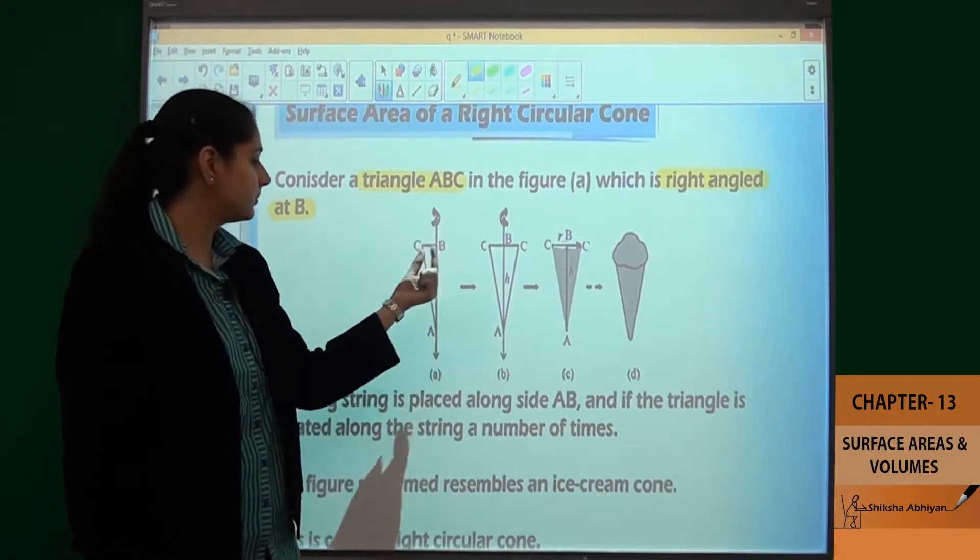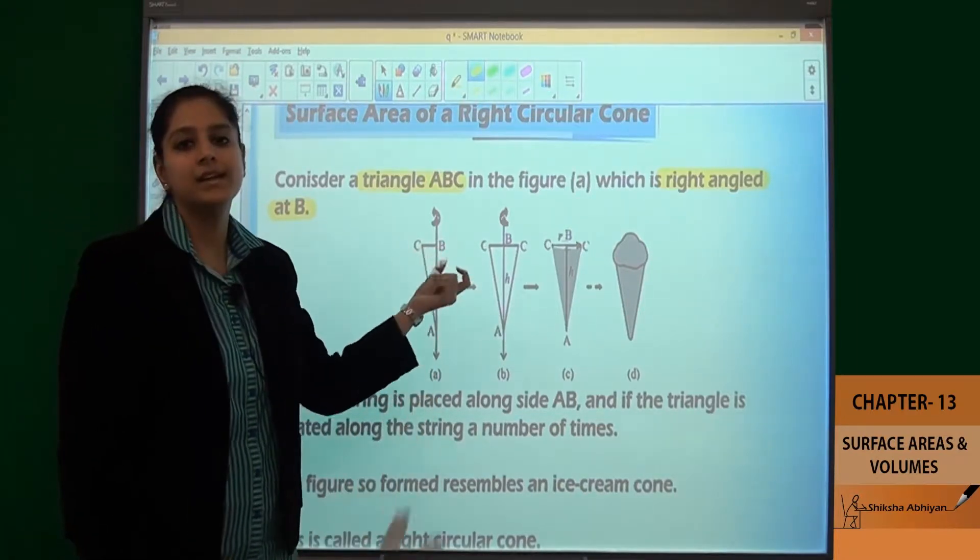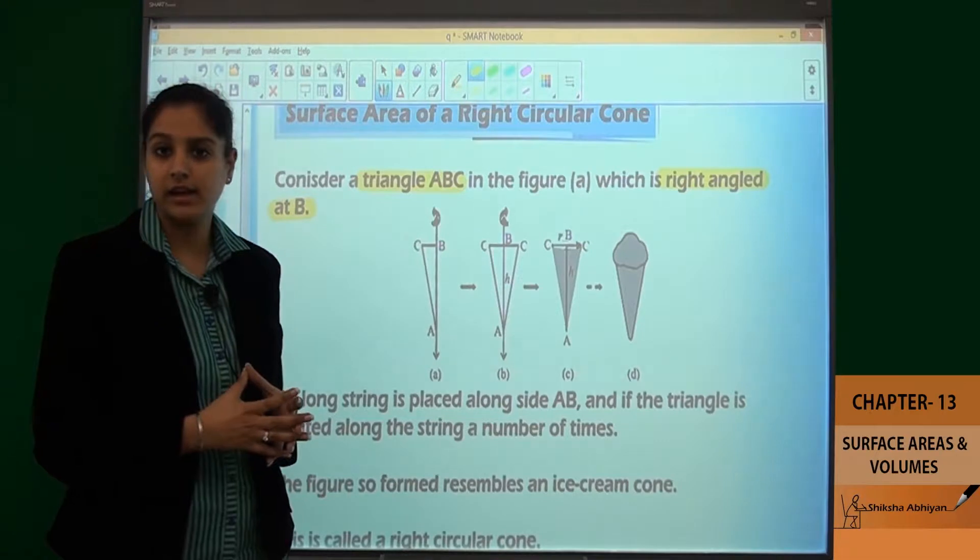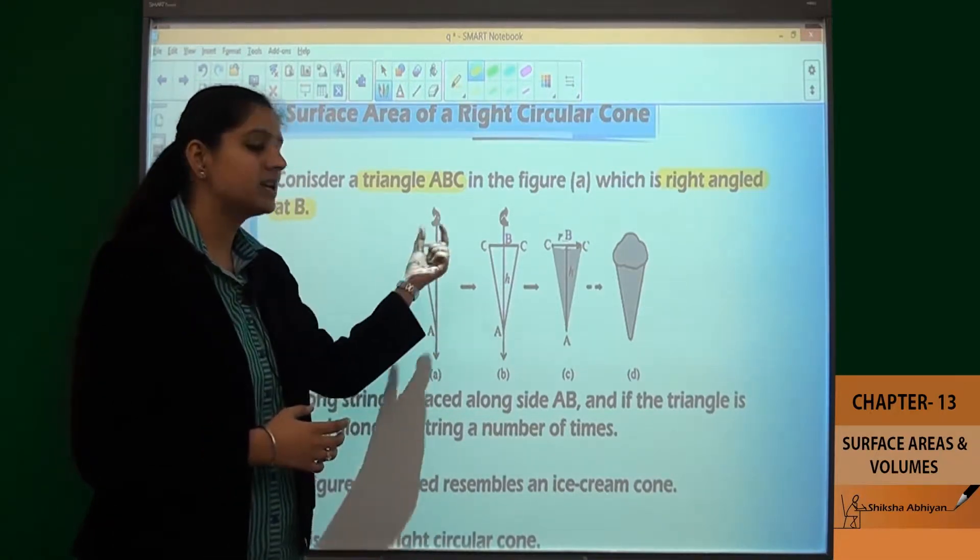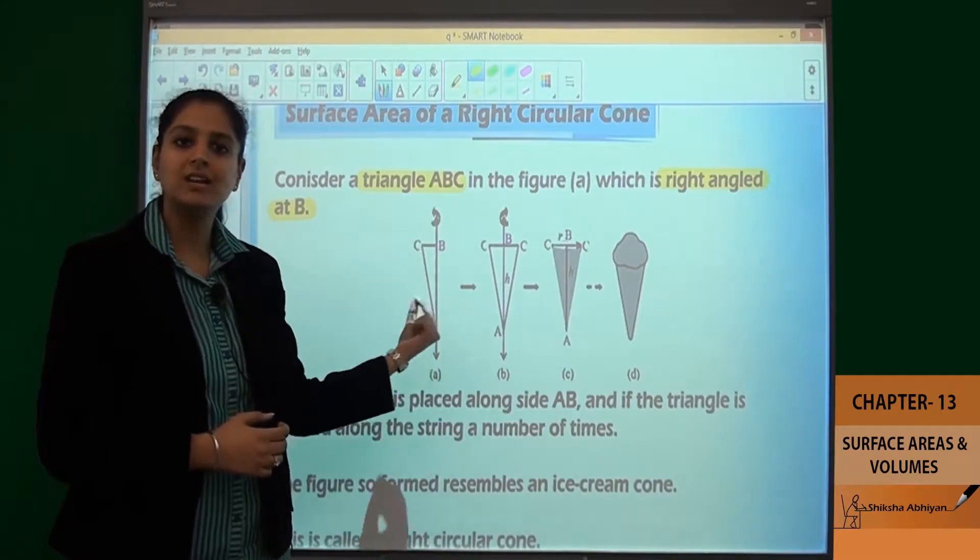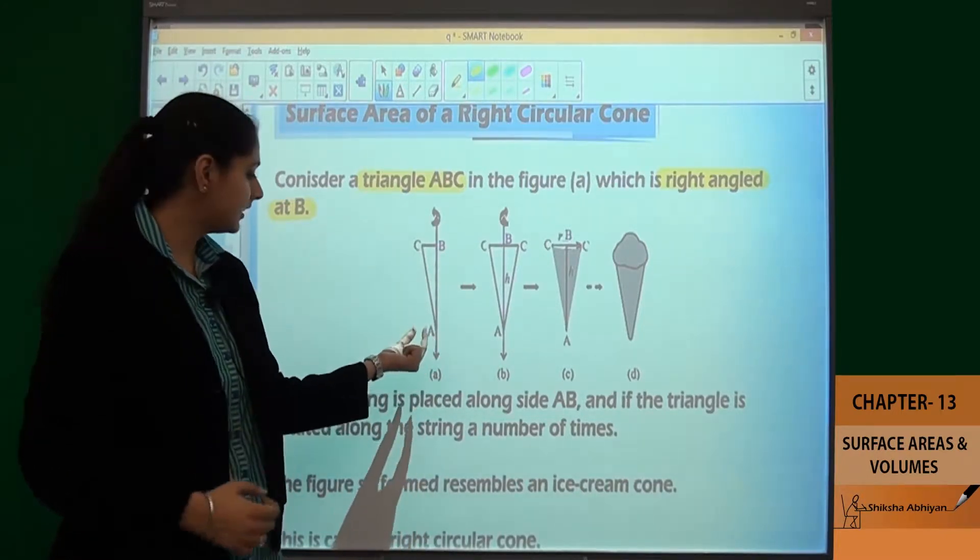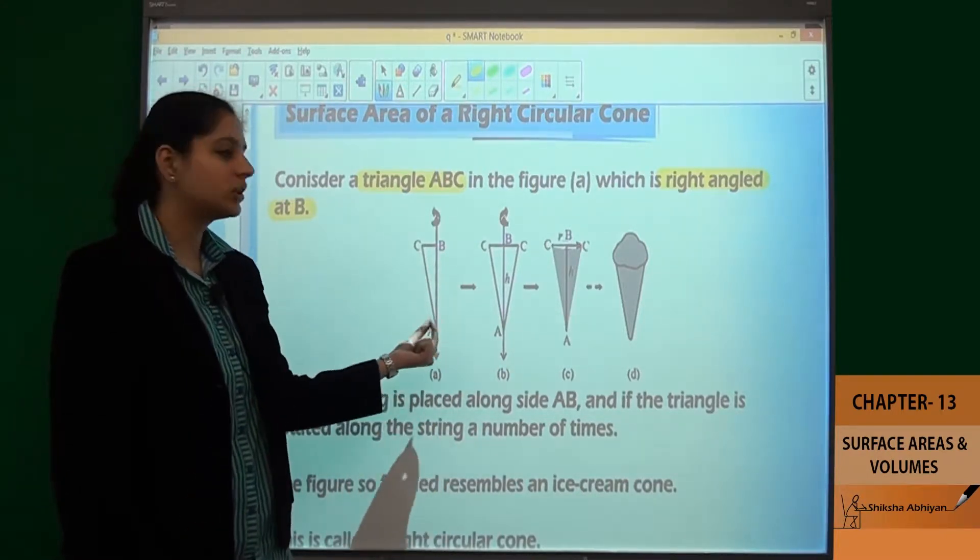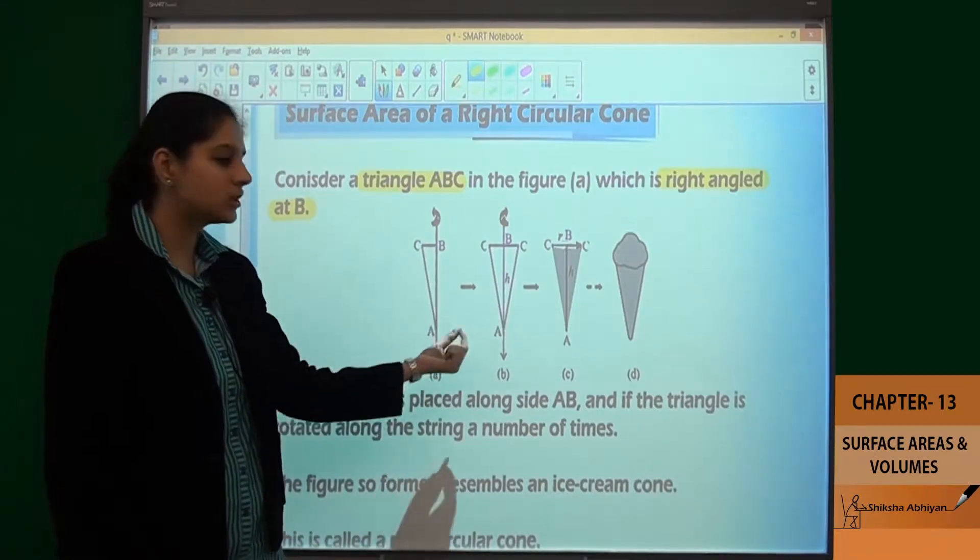It is right angled at B. We have taken a right angle triangle ABC, where B is the right angle. Now if we rotate it from point A, for example, if we rotate the AB side.